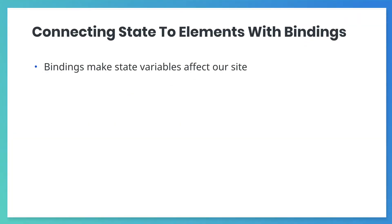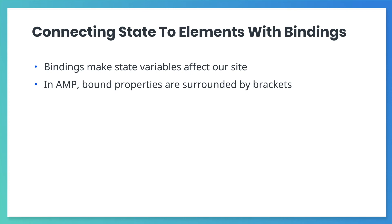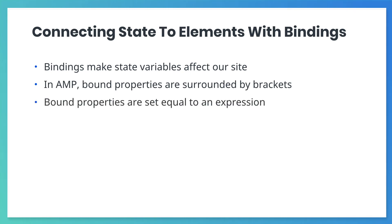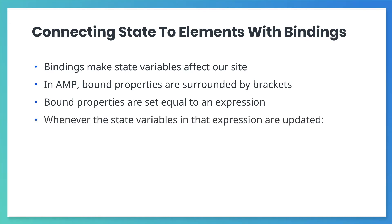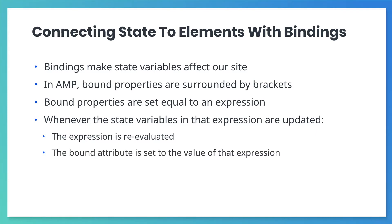Bindings make connections between attributes of components and state variables. In AMP, we define a binding by surrounding the name of an attribute with brackets. We set that binding equal to a JavaScript expression, and whenever state variables are updated, these binding expressions are re-evaluated. And then the bound attribute is set to the value of that expression.